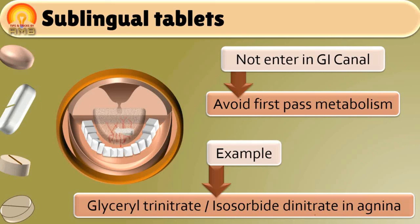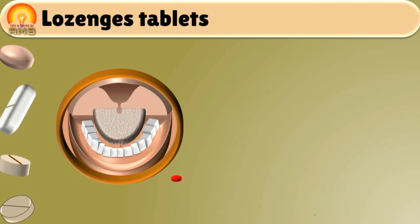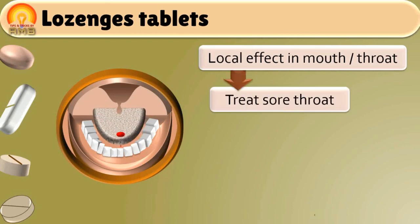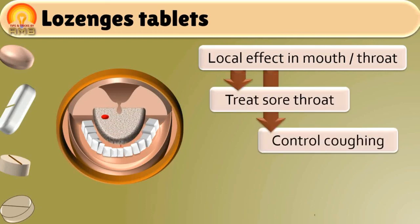Now next type is lozenges tablets or troches. These tablets are used in mouth cavity to achieve local effect in mouth and throat, usually used to treat sore throat or to control coughing in common cold.